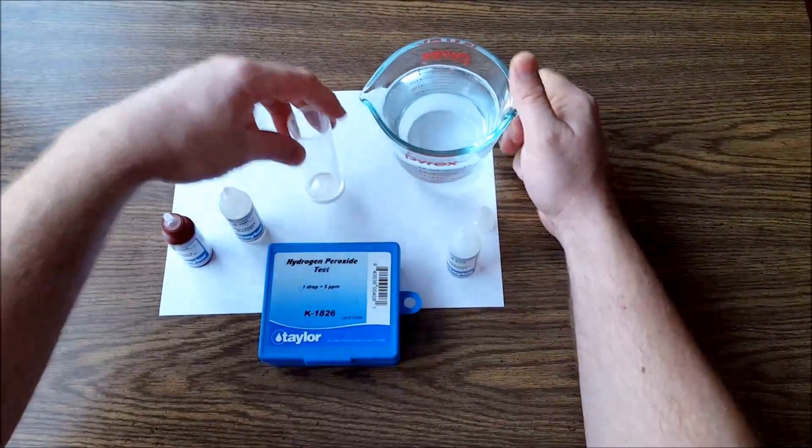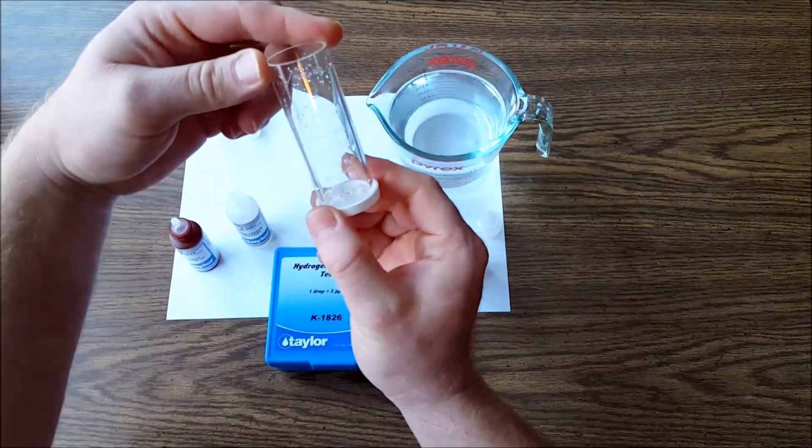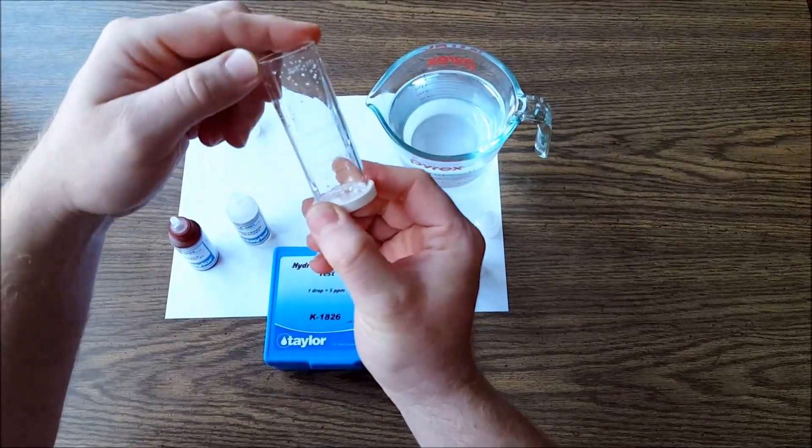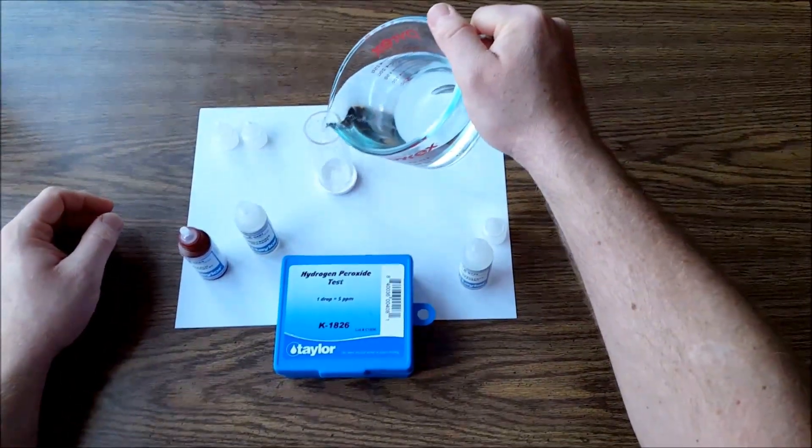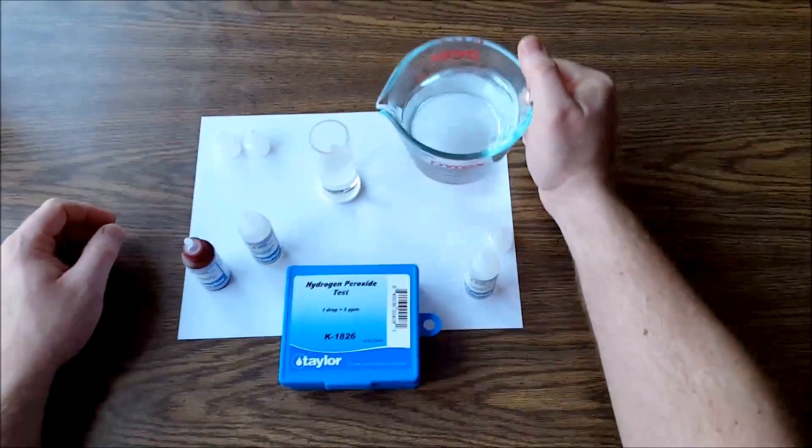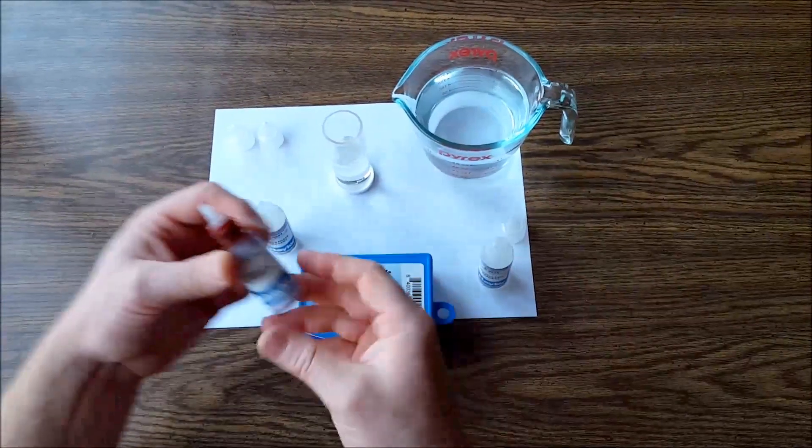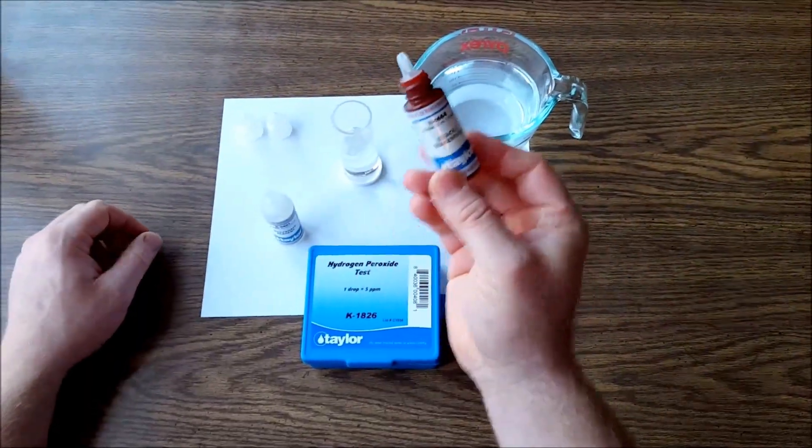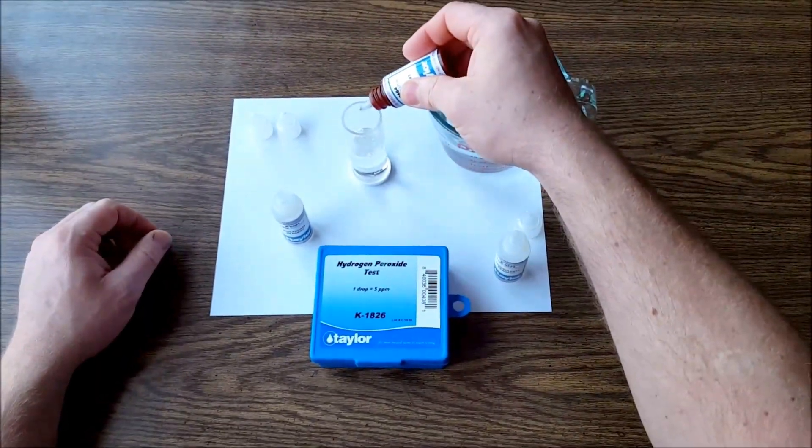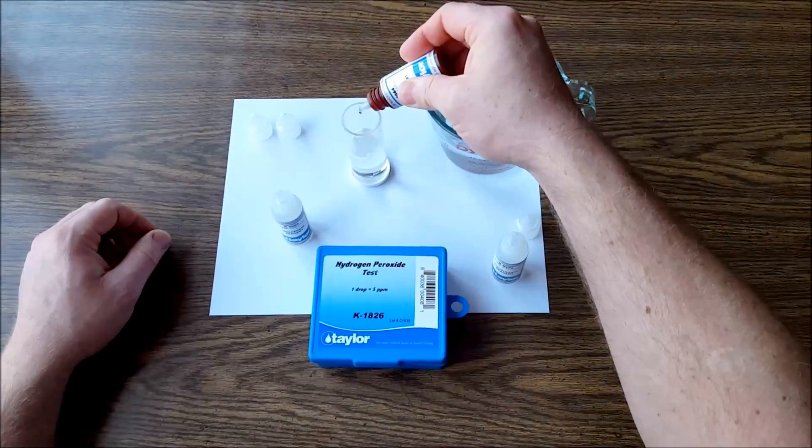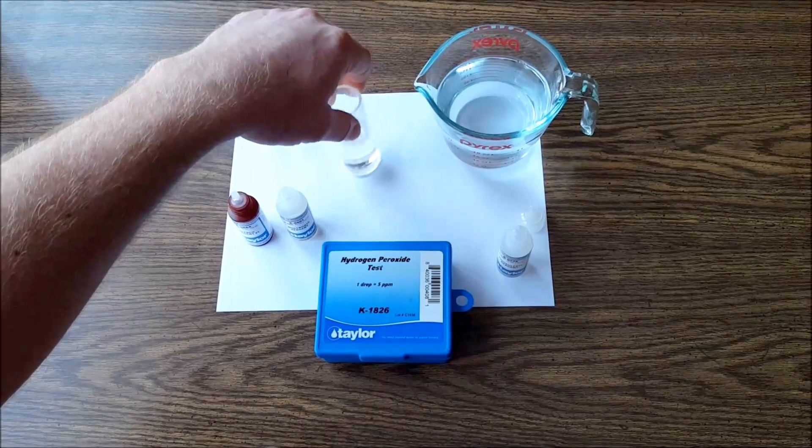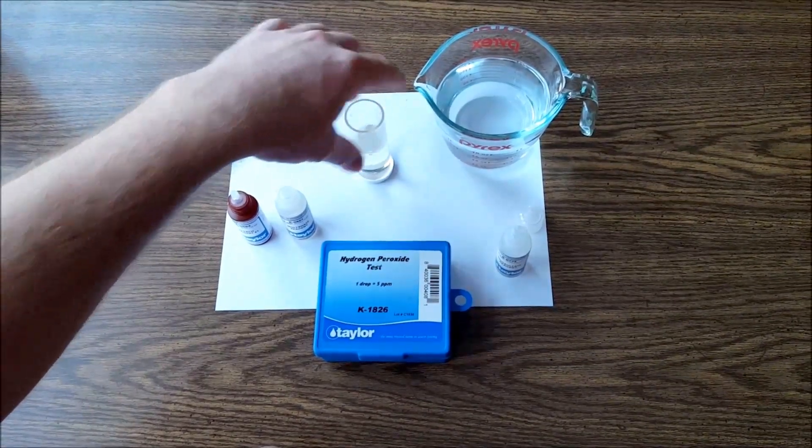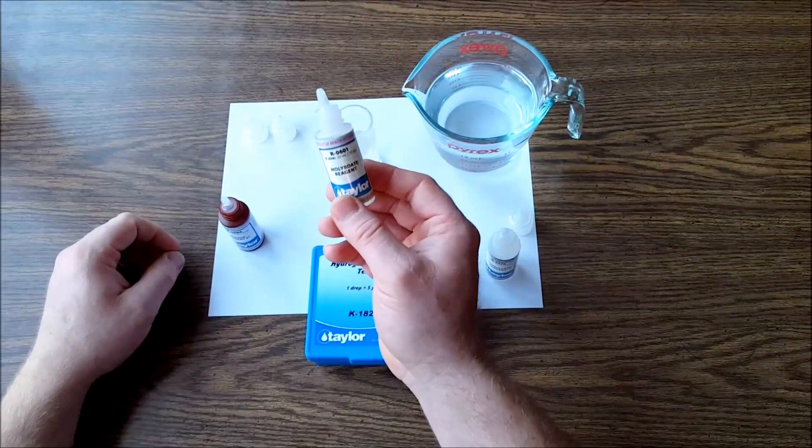Basically you take your float tank water and you fill it up to the line on here, 25 milliliters right there. And you add your bleach reagent, 10 drops: 1, 2, 3, 4, 5, 6, 7, 8, 9, 10. Give it a good swirl, make sure it's mixed in there.